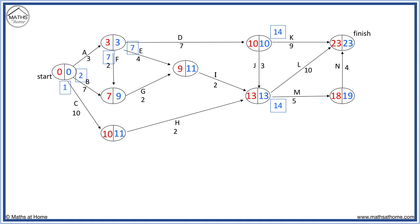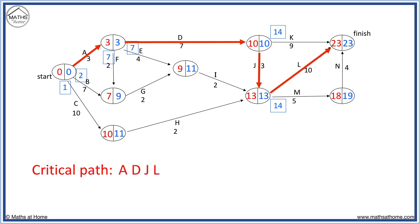The backward scan is now complete. The critical path is found where the left and right numbers in each node are equal. That is from 0-0 to 3-3 to 10-10 to 13-13 to 23-23. That is tasks A, D, J, L. These four tasks are critical tasks, which means that they must be completed immediately to avoid delaying the overall completion time of the project.